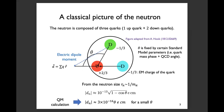Let's begin with the classical picture of the neutron. The neutron is composed of three quarks: one up quark and two down quarks. The up quark has electric charge plus two-thirds and the down quark has electric charge minus one-third, so the sum is zero and the neutron is electrically neutral. Because of this internal structure, the neutron can have a non-zero electric dipole moment. Suppose these three quarks are positioned with a certain angle theta, which is fixed by a standard model parameter — namely the quark mass phase and the so-called QCD angle.